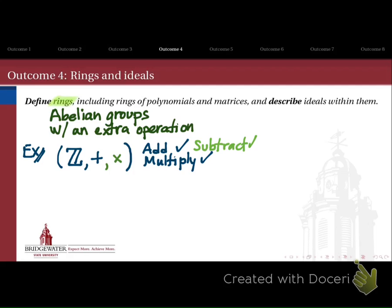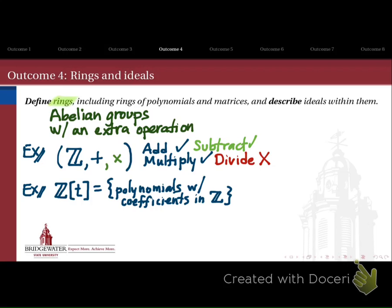We can also look at rings of polynomials — the set of all polynomials with integer coefficients forms a ring under addition and multiplication of polynomials, but again we can't always divide one polynomial by another and get a polynomial. Likewise, the set of all n×n square matrices with addition and matrix multiplication also forms a ring, but we don't necessarily get division since not every n×n square matrix is invertible under multiplication.